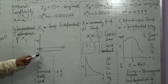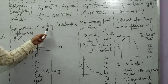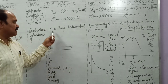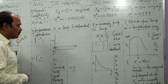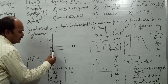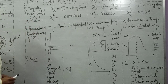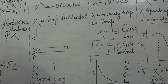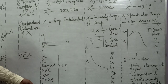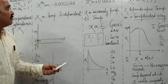For diamagnetic substances, magnetic susceptibility does not depend upon temperature. It is negative and very small, and that negative value remains the same regardless of temperature. Examples of diamagnetic materials include copper, diamond, gold, lead, mercury, and silicon.